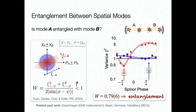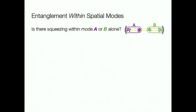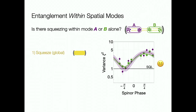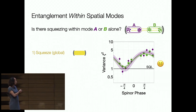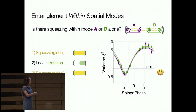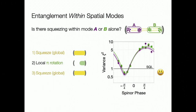We can generate global entanglement and show entanglement between two spatial modes. You could also ask whether there's entanglement just within individual spatial modes. If we simply look at how squeezed sub-ensemble A or sub-ensemble B is individually—like putting a squeezed state on a beam splitter—the squeezing is degraded and we no longer see entanglement in individual ensembles. But we can play a trick: squeeze the entire system, then locally perform a pi rotation on ensemble B, then squeeze again. This undoes the inter-ensemble entanglement and enhances the intra-ensemble entanglement, yielding individually entangled states for each ensemble, extendable to an array.